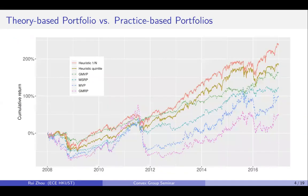For example, here we plot the cumulative return of six portfolios. Four of the portfolios are theory-based portfolios and two of the portfolios are heuristic portfolios. It's very interesting because these heuristic portfolios defeat the theory-based portfolios in the cumulative return. So what are these heuristic portfolios and why is that?